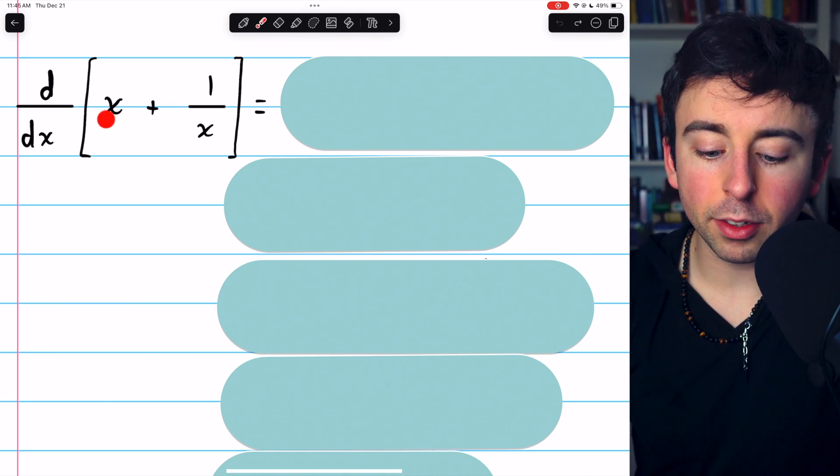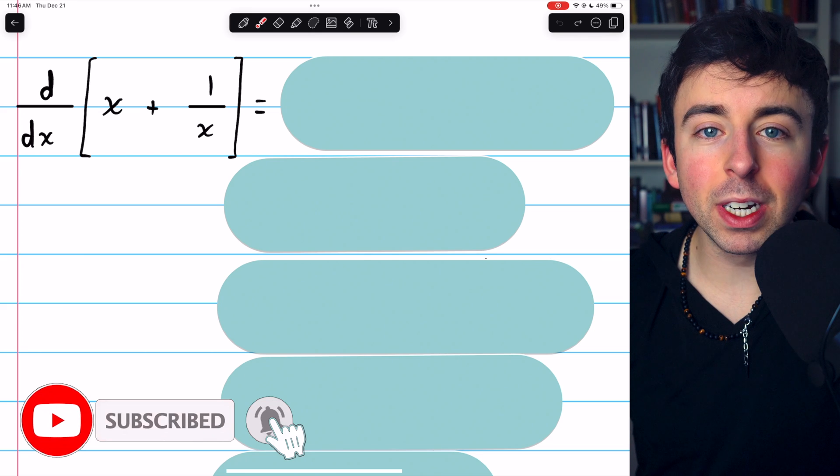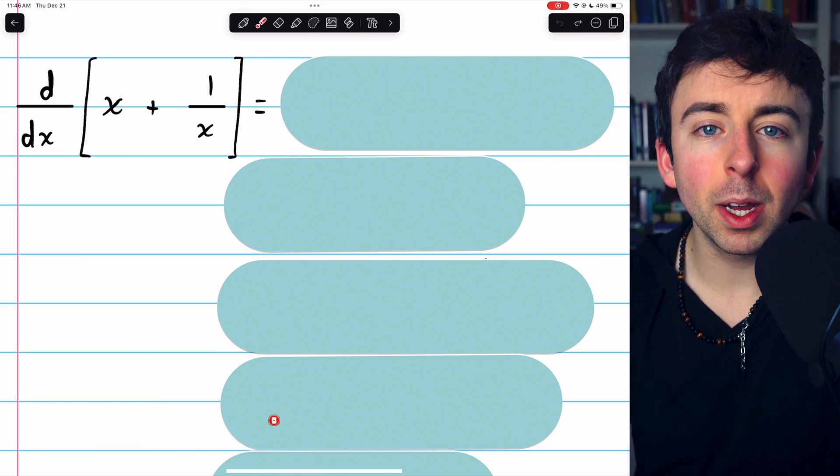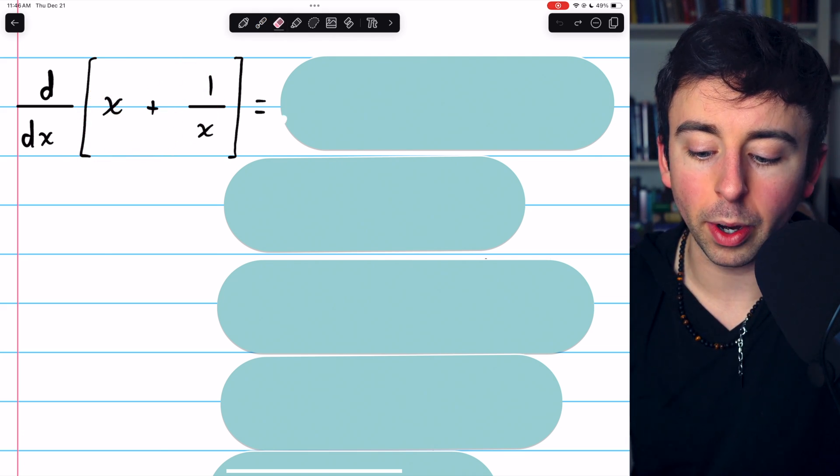Let's find the derivative of x plus 1 over x using the limit definition of the derivative. Really, you can just split this up into the sum of two derivatives, but let's just apply the limit definition to this as a single function to see how it works out.